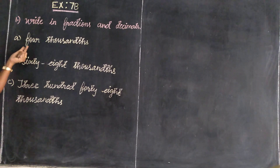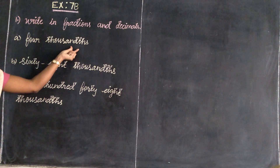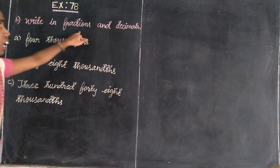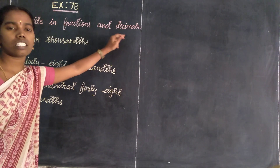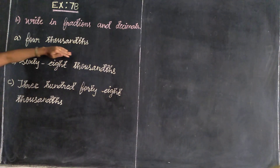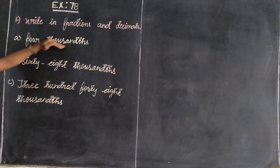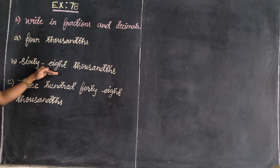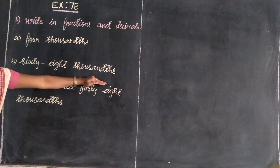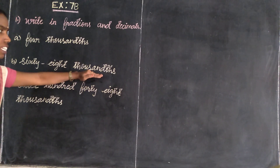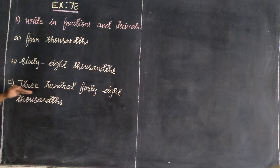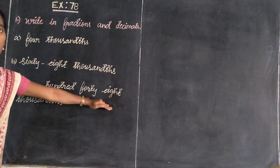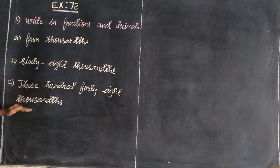The first number is 4,000. The second one is 68,000. Then 340,000 and 48,000. We need to look at how to change these values when they are in the thousands — into their decimal and fraction forms.